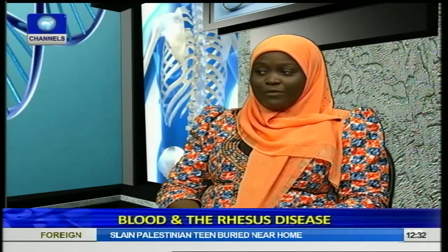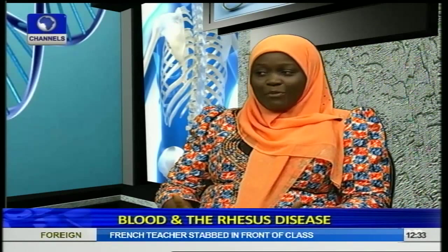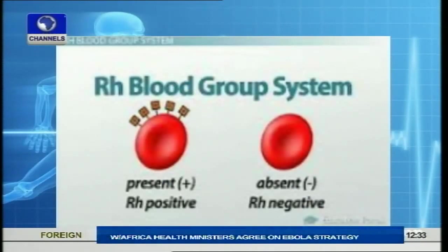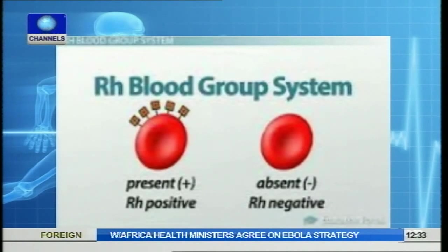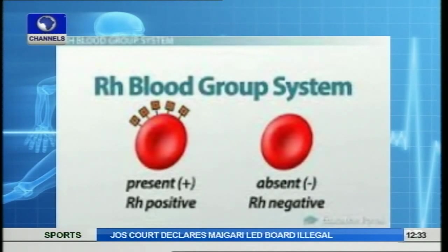When people inherit the rhesus blood type and they are positive, we put a positive symbol beside their ABO blood type. The rhesus blood type is just a type of protein that we find in red blood cells, and it simply distinguishes blood into positive or negative. It has absolutely no effect on our health. But as noted, it is very important in pregnancy — important because when a woman lacks the rhesus factor on her red cells and the unborn child has the rhesus factor on his red cells, then there will be rhesus incompatibility.